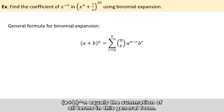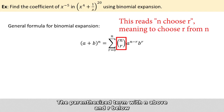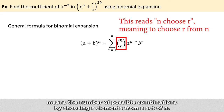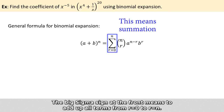So the sum of a and b raised to the power of n equals the summation of all terms in this given general form. The parenthesized term with n above and r below means the number of possible combinations you can get by choosing r elements from a set of n. The big sigma sign at the front simply means to add up all terms from r equals 0 up to r equals n.